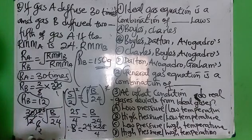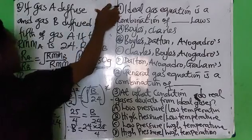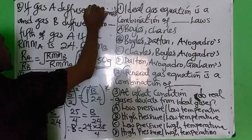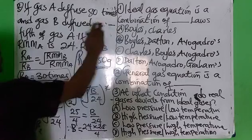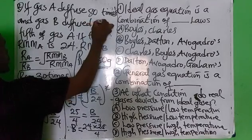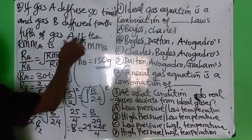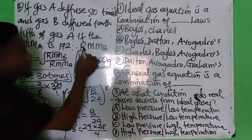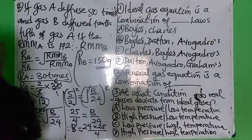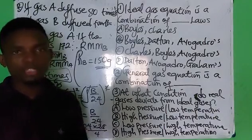So let me give you something to do. If gas A diffuses 80 times and gas B diffuses four-fifths of gas A, and the relative molecular mass of A is 172, what is the relative molecular mass of B? Drop your answer in the comment section — everybody must do it. At this point, we call it a day. If you have learned something, please endeavor to subscribe, like, share, and comment. Do have a wonderful day.